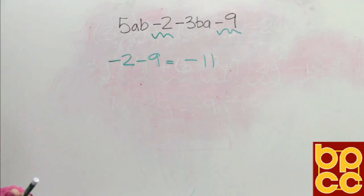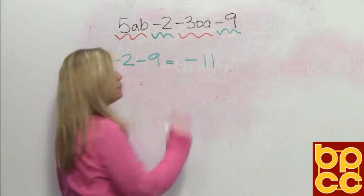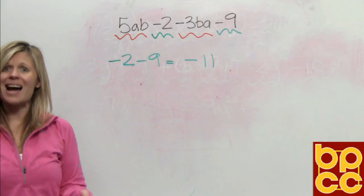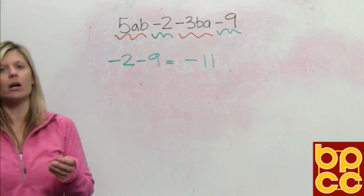Now, we're looking for other like terms. And this is not so clear. I have 5ab and negative 3ba. Well, that doesn't sound alike, but in all honesty, they are alike. Let's talk about why.